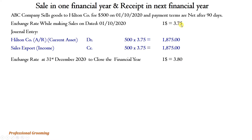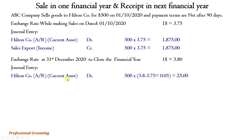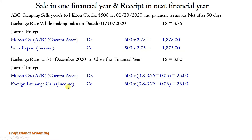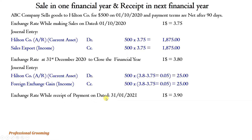Since the year-end rate of 3.8 is higher than the sale rate of 3.75, we record an unrealized gain. Journal entry at 31st December 2020: debit Hilton company accounts receivable $500 × (3.8 − 3.75) = 0.05 × 500 = 25; credit foreign exchange gain (income account) 25.